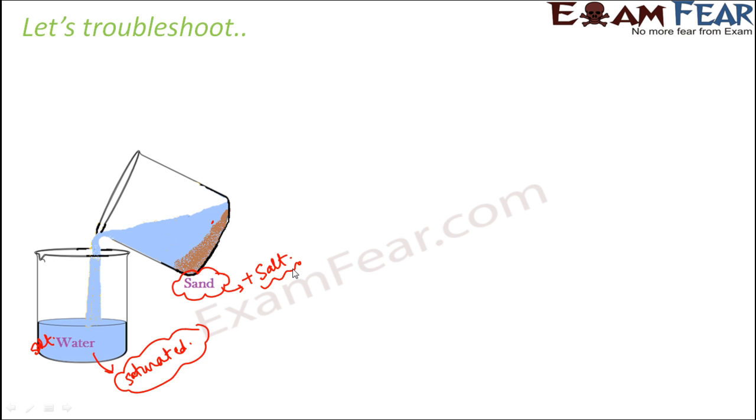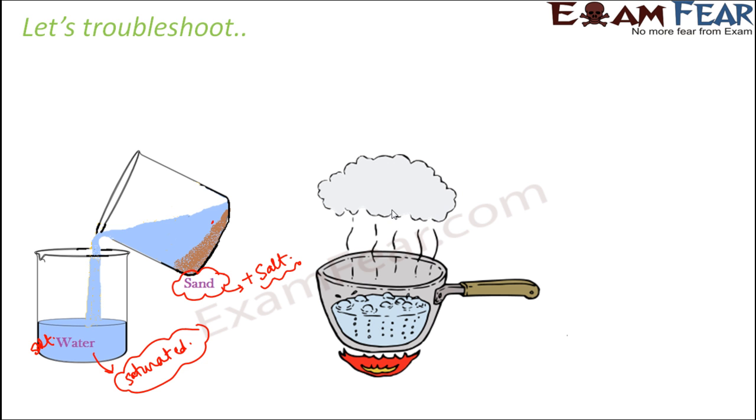Later in the second step, when we did the evaporation process, we did it with this water. So this salt water was evaporated. The amount of salt which we received here was less because some amount of salt had already been missing at the first step itself.